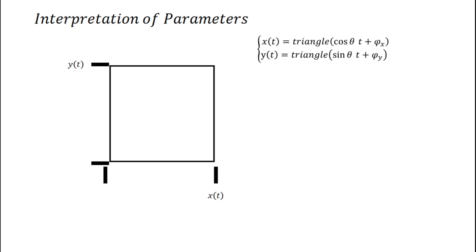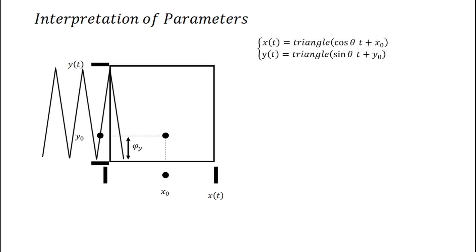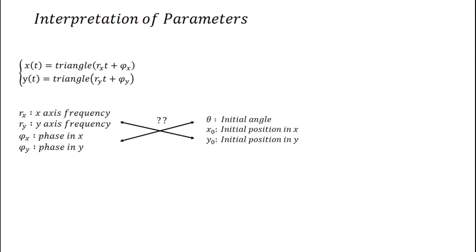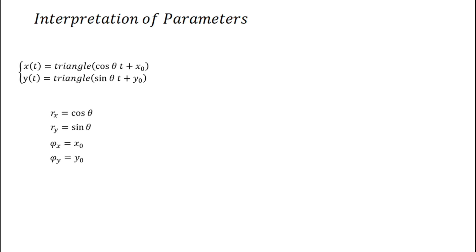So now what about the initial position? Let's place a point on coordinates x0 and y0 and see the impact of changing the y-coordinate on the y-component. So as you can see, the y-coordinate controls the phase of the y-component. And in a symmetric way, it is the same for the x-axis. So we can rewrite our equation this way. And here the job is done. The rx and ry frequencies are given by the coefficients cos theta and sin theta. The phase phi of x and phi of y is the initial position x0 and y0.